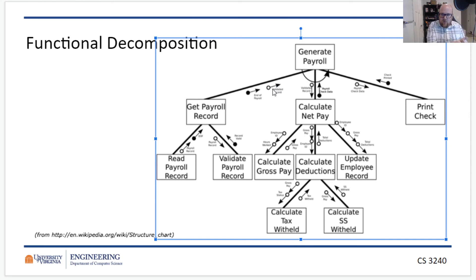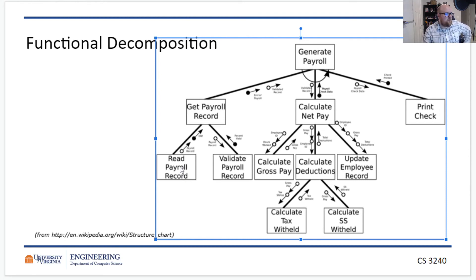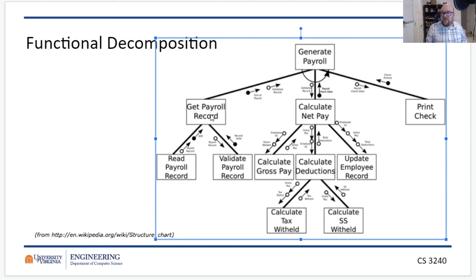You can also do functional decomposition within object-oriented design — take a single function and decompose it further if it's complicated. However, there's still the issue of information hiding: the way payroll records are read from a file, with end-of-file information being sent to 'get payroll record,' isn't really information hiding. For a more complicated system, we'd want to start thinking about objects, which we'll cover in object-oriented decomposition next time.